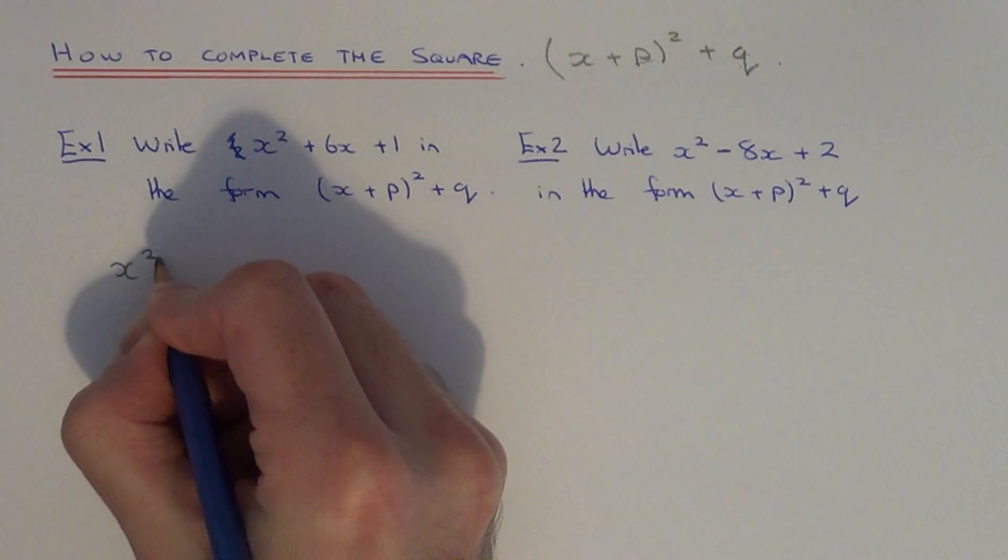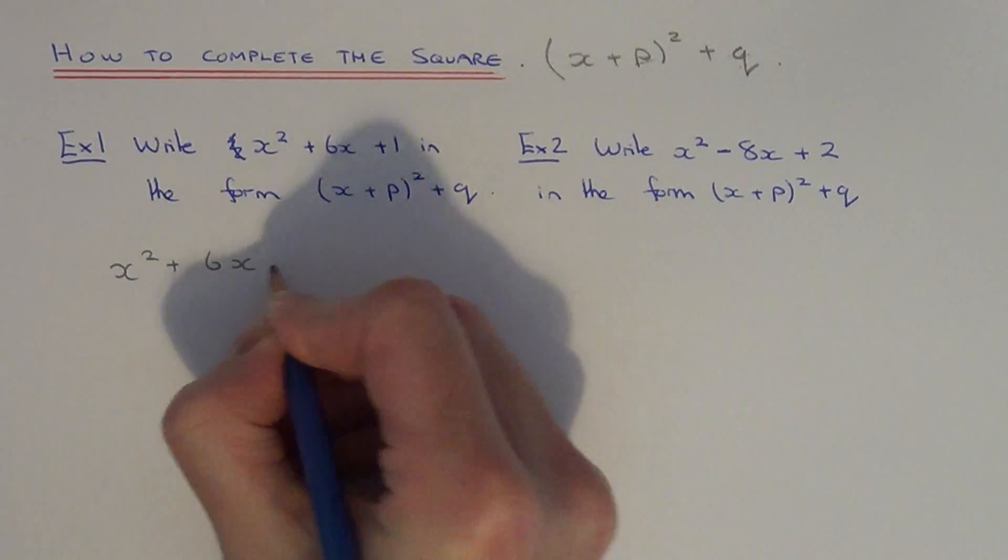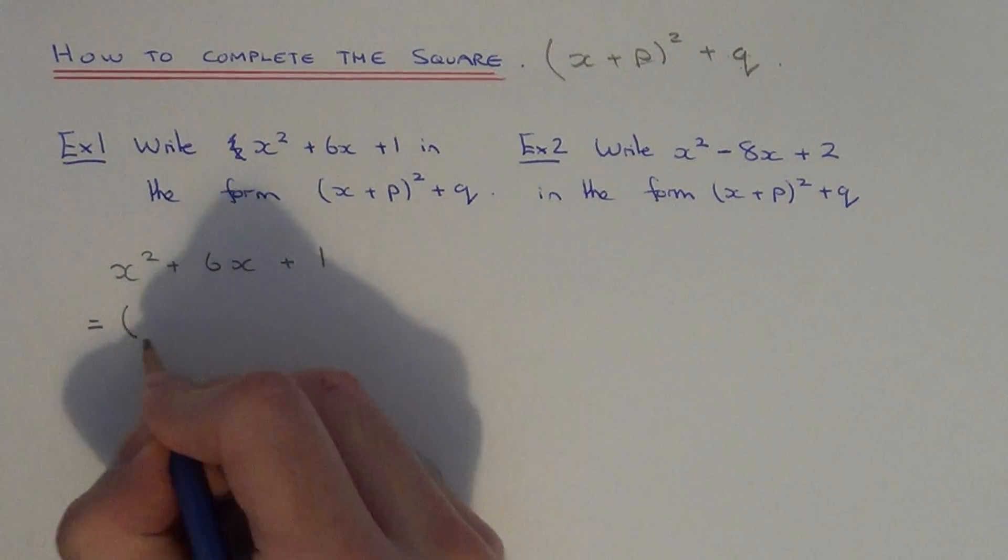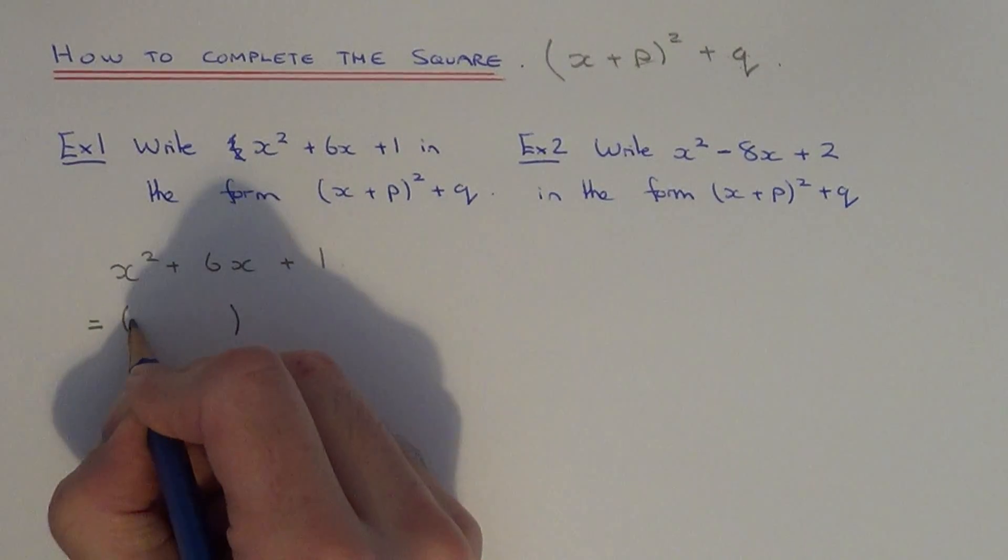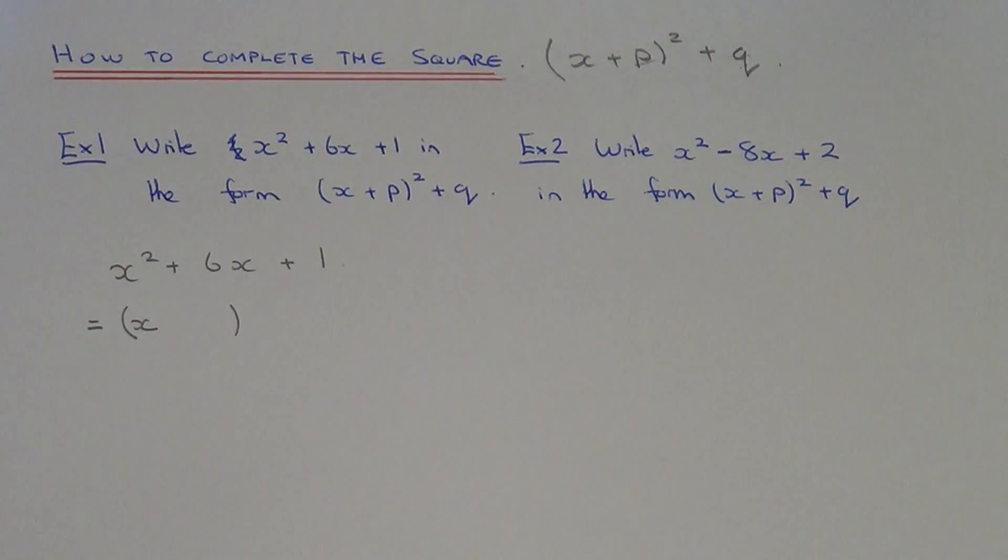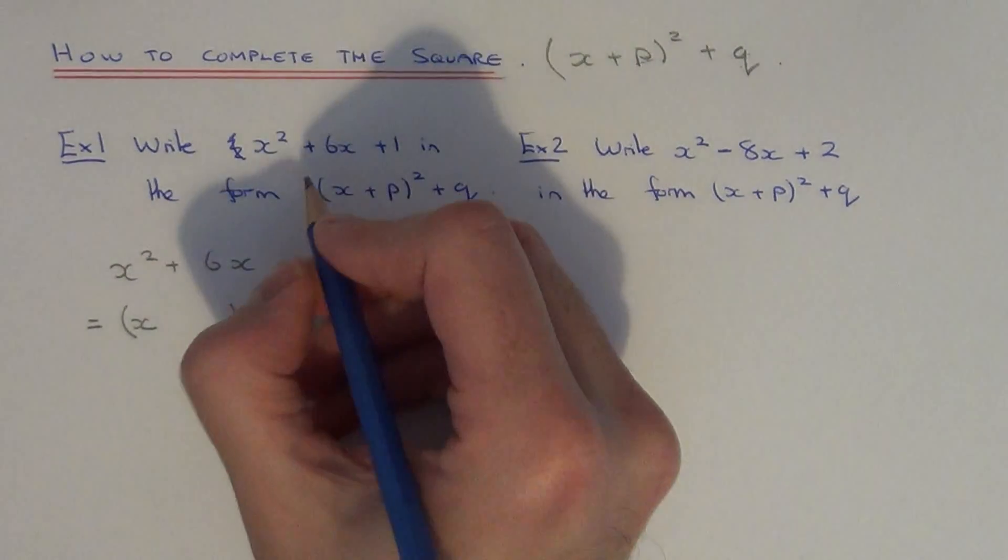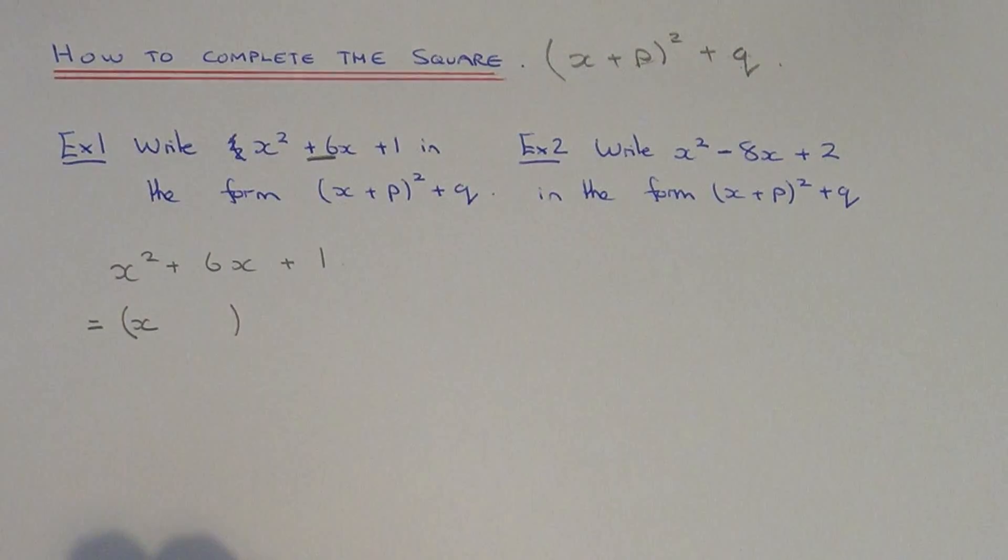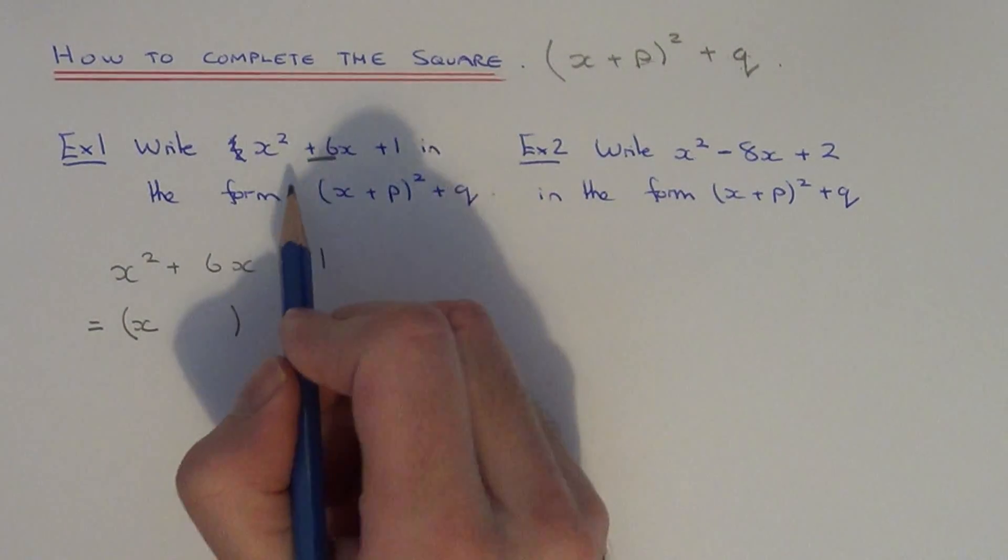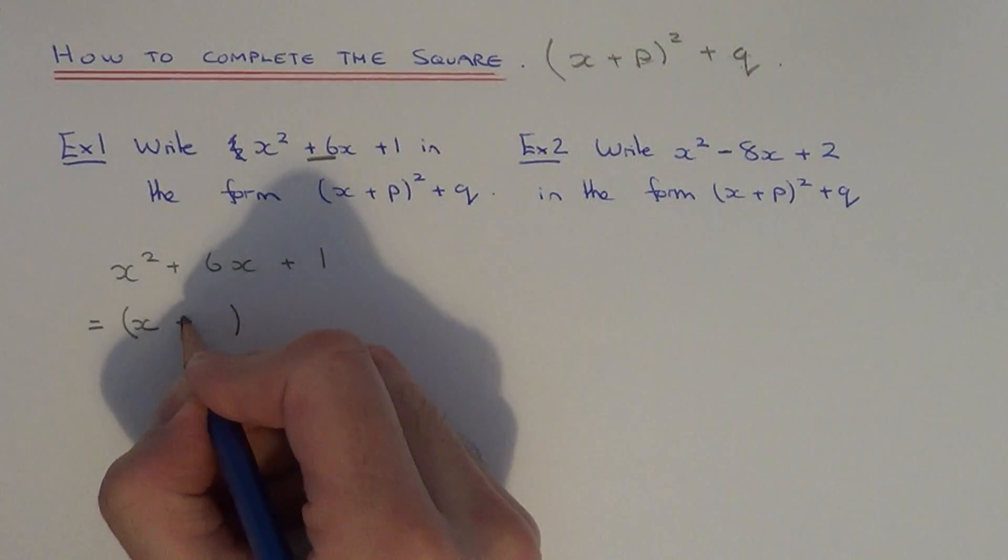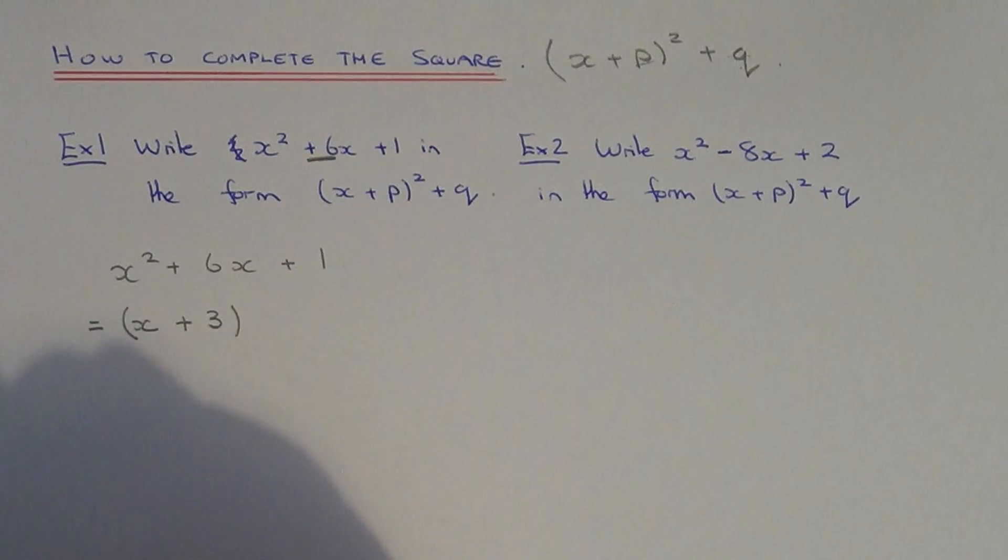Let me write down the expression again. First of all, just put your brackets down here and put an x here. Now working out p is very easy to do. All you need to do is half the number before x. The number before x is 6, so half of 6 is 3. So you put plus 3 inside the bracket.